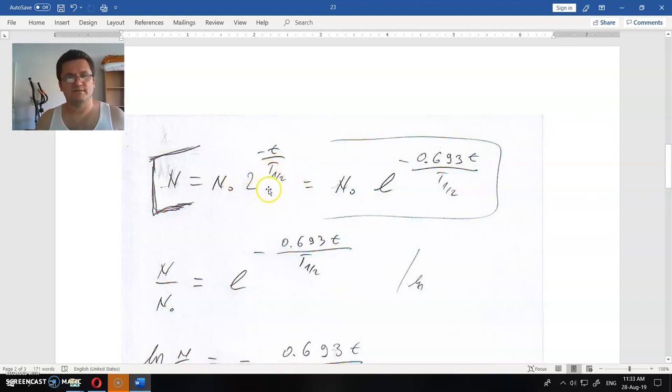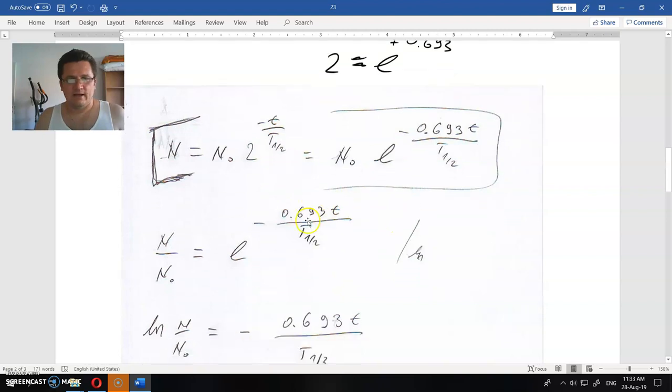And how we calculate? For simplicity of the calculation, instead of 2, we will write e. e is the foundation of natural logarithm, very similar to 2, but a little different. Actually, 2 is equal, almost equal, to e^0.693. So it doesn't change much, but it's easy to calculate.